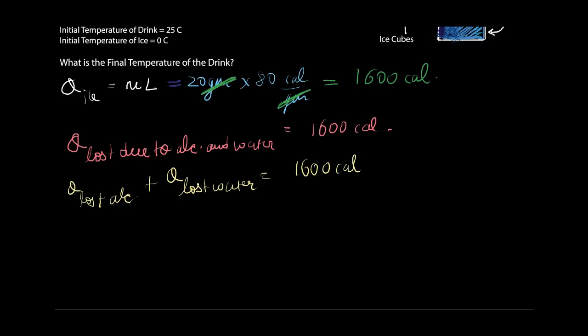And we also know that Q is MS delta T, where S is the specific heat. So what is the heat lost due to alcohol then? The heat lost due to alcohol according to this is the mass of alcohol times the specific heat of alcohol times delta T plus, and similarly, this will be mass of water times specific heat of water times the same delta T and that should be 1600 calories.